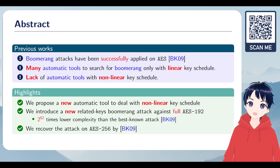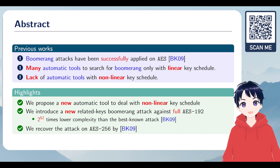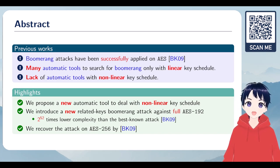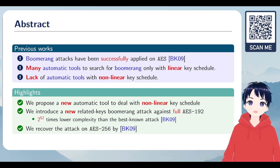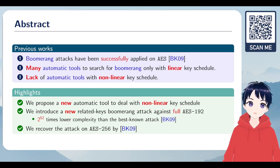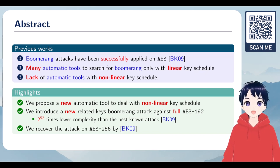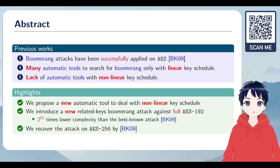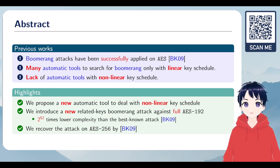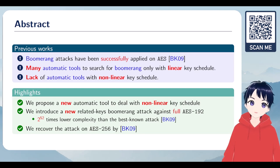This model is more complex and too slow for an exhaustive search. However, when some hints are added to the solver, it found a new boomerang attack against full AES-192. Its complexity is 2 to the power of 52 times lower than the one presented by Biryukov and Khovratovich. And we also recover the attack on AES-256 of Biryukov.